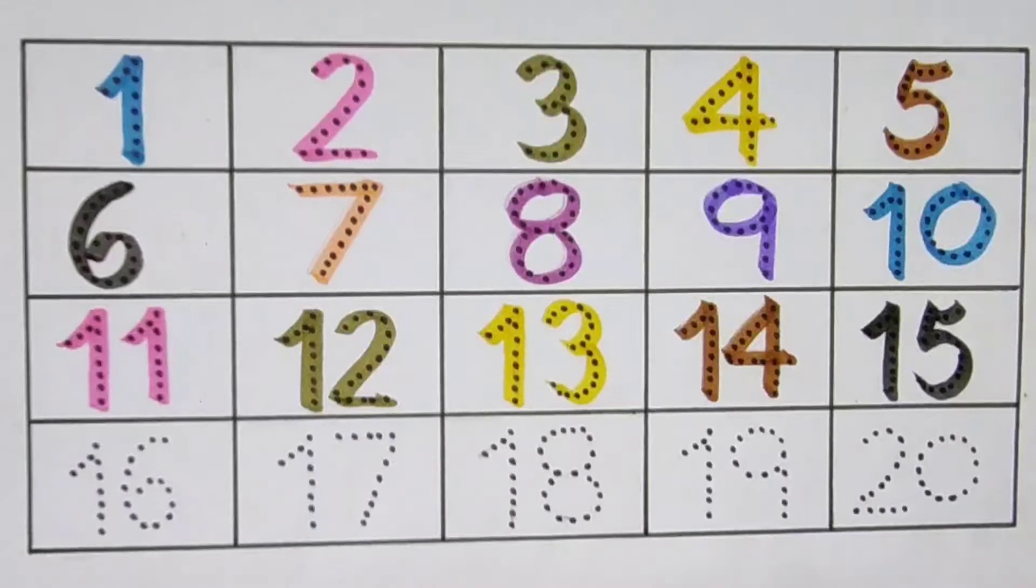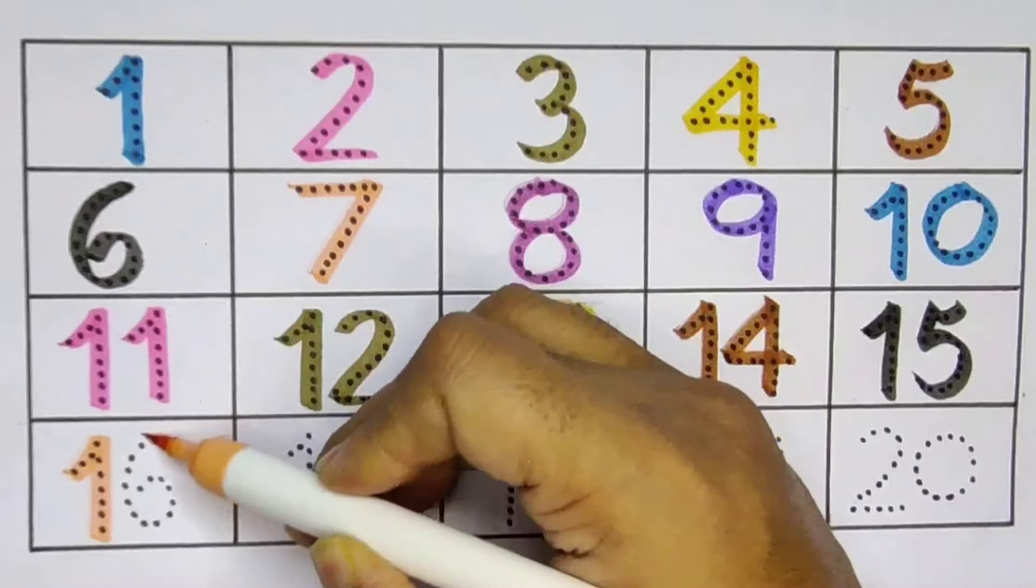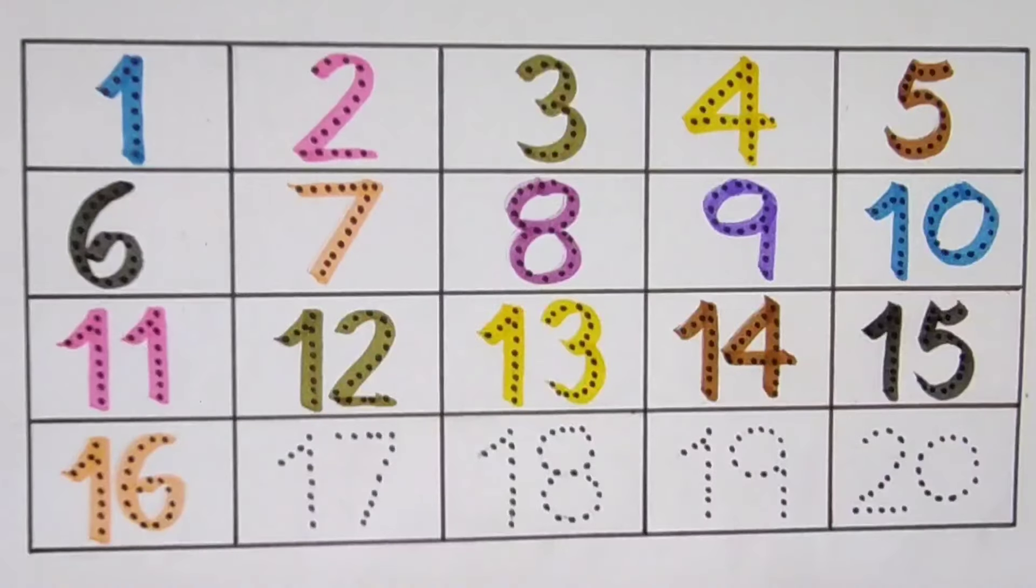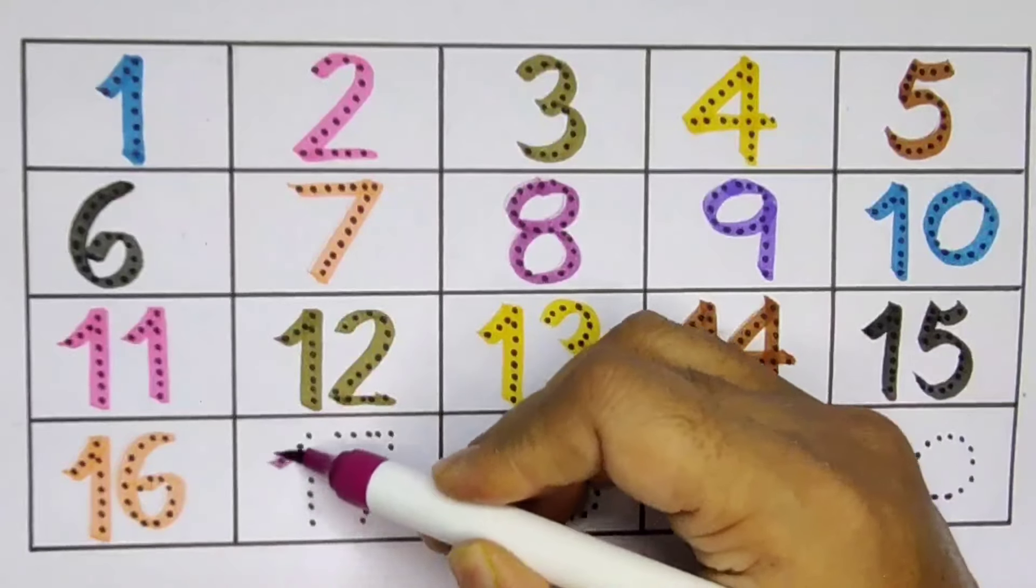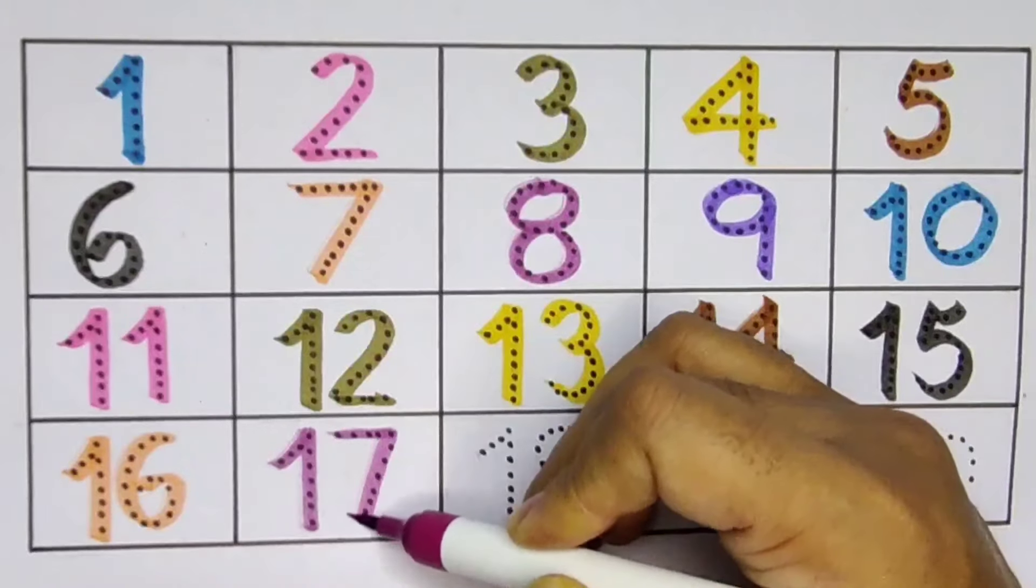Next 16, 1, 6, 16, number 16. Next kids 17, 1, 7, 17, number 17.